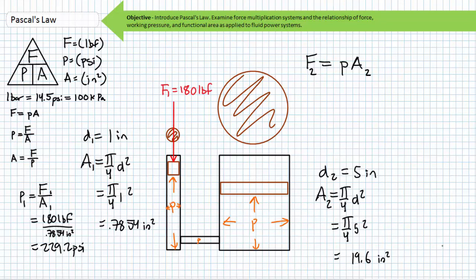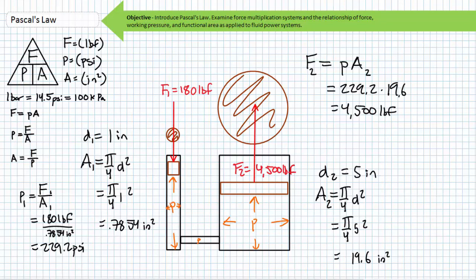Pascal's Law can be used to calculate the resultant force exerted by piston 2: force equals pressure times area. Substituting the necessary values, F2 is found to be 4,500 pounds force — essentially a 25-times increase from our original 180-pound force input. Force was applied to the smaller area of cylinder 1, resulting in high pressure. This same high pressure was then applied to the large area of cylinder 2, resulting in a high force.